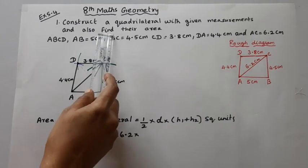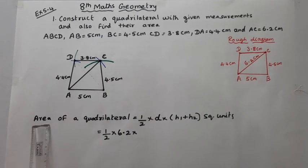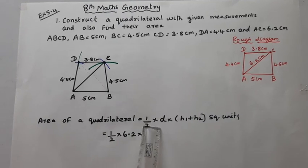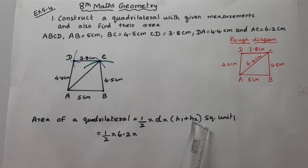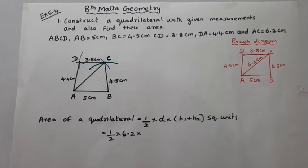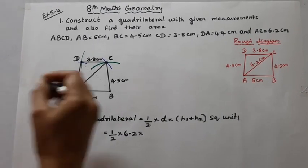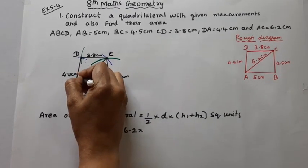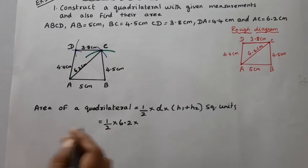Find the area of the quadrilateral. The formula is: Area = 1/2 × d × (h1 + h2) square units, where d is the diagonal. The diagonal AC = 6.2 cm. We need to measure the perpendicular heights h1 and h2 from vertices B and D to the diagonal.